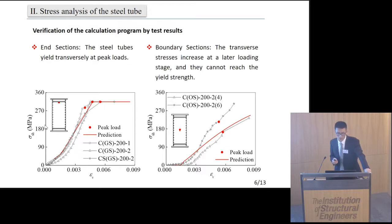Besides, for the end sections, the steel tubes yield transversely at peak loads. Whereas for the boundary section, the transverse stress increases at a later loading stage and cannot reach the yield stress.